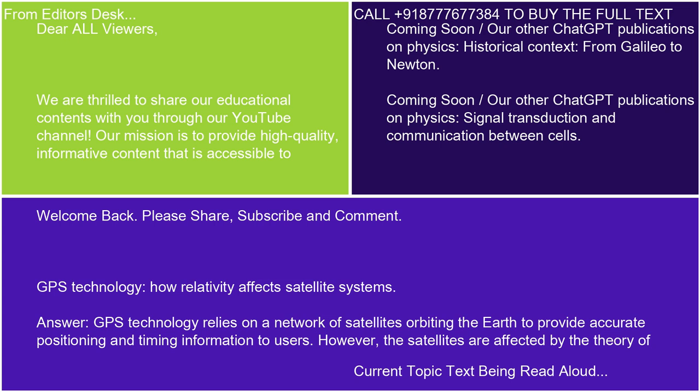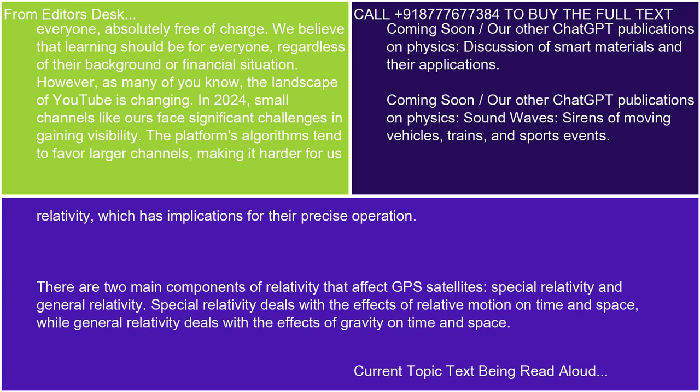GPS technology relies on a network of satellites orbiting the Earth to provide accurate positioning and timing information to users. However, the satellites are affected by the theory of relativity, which has implications for their precise operation. There are two main components of relativity that affect GPS satellites: special relativity and general relativity.